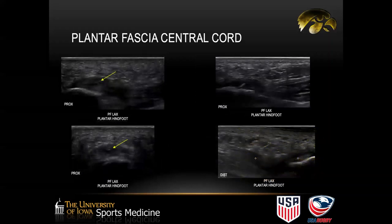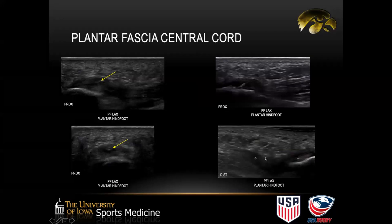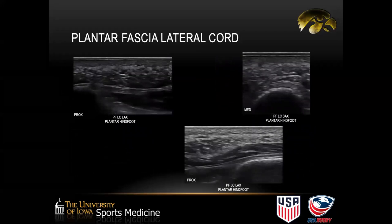A few correlative examples for the central cord: at the insertion, you can see an intra-substance tear denoted by the yellow arrow, shown in both long and short axis. Some patients will have calcific changes at the origin, which can be quite uncomfortable. Plantar fascia rupture shows complete loss of tension between the two ends of the plantar fascia with no normal fibers spanning the gap. These are not our patient — just correlative examples.